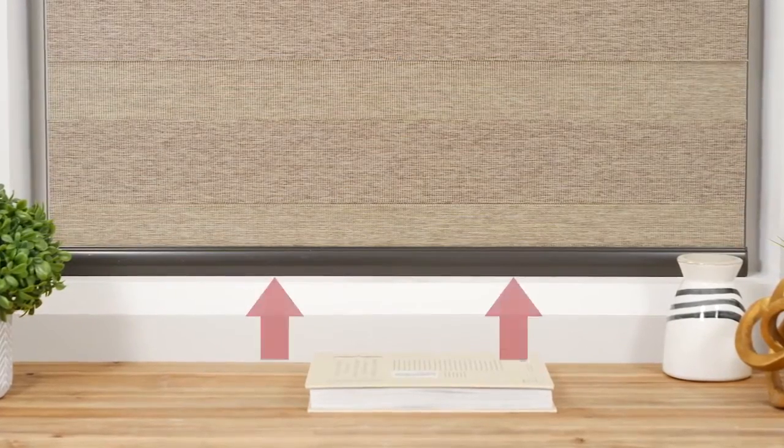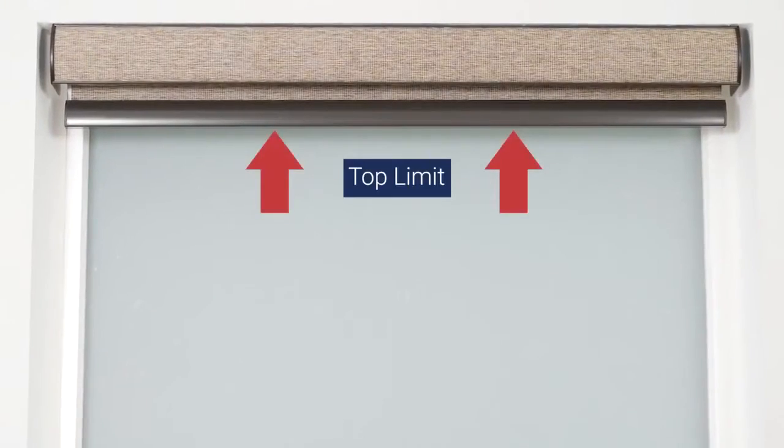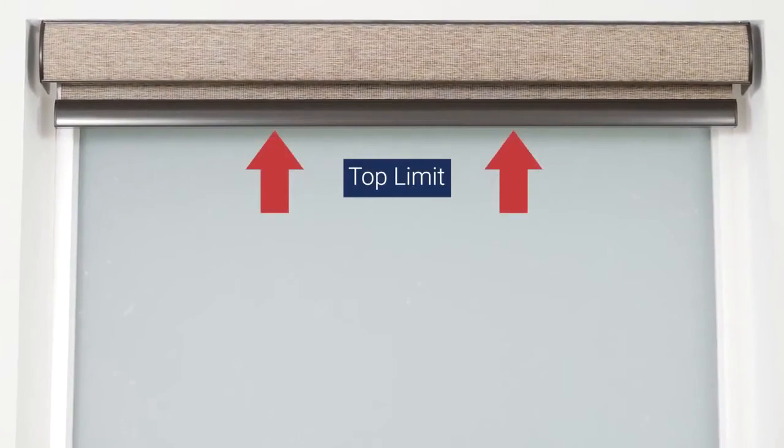Next, we'll review how to adjust your shade's lower limit. This step is optional as your shade comes from the factory with the upper and lower limits already programmed.